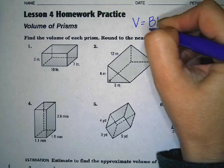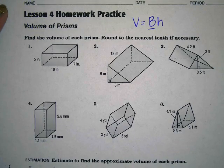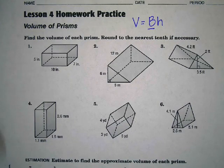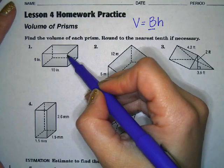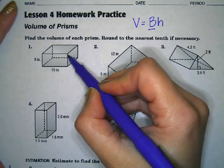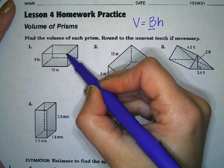So we're going to have to determine what shape our base is to be able to multiply our height. Looking at number one, we have a rectangular prism. That means that our base is a rectangle.